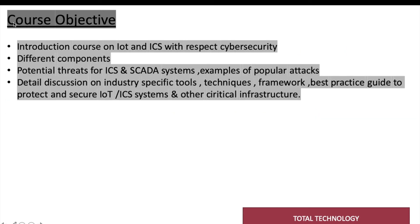Regarding the course objectives: in the first part, we'll discuss the introduction to IoT and ICS with respect to cyber security. There are three different parts — IoT means Internet of Things, ICS means Industrial Critical System, and cyber security. We're going to discuss what IoT is, what ICS is, and how these things relate to cyber security. After that, we'll talk about the different components of IoT and ICS with respect to cyber security.